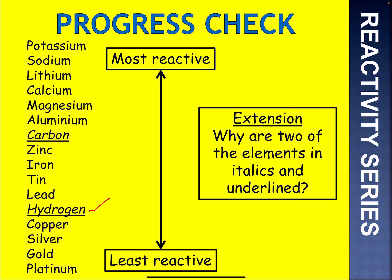Extension question: if you look at the two elements in italics and underlined, why are these different to the rest of the elements? The rest are metals — carbon and hydrogen are non-metals. That's where they fit into the reactivity series.